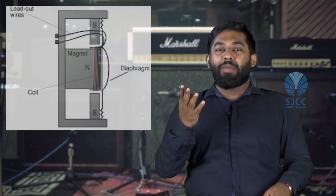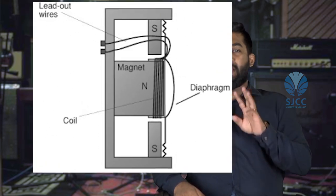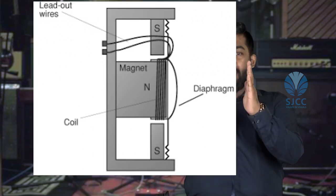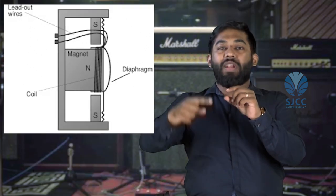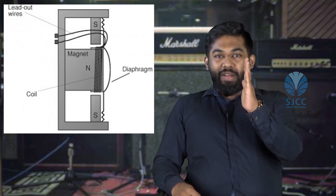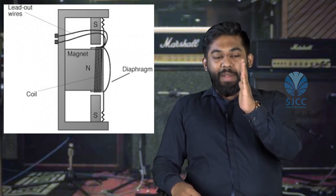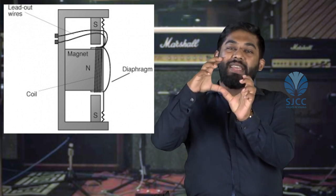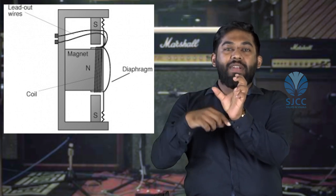Let's look into dynamic microphones. A dynamic microphone has basically three parts. First, a diaphragm, which is made out of a thin sheet of plastic. Second, a coil and a donut-shaped magnet. This diaphragm, which is made of a thin sheet of plastic, is attached to the coil. This coil is sitting inside the donut-shaped magnet.